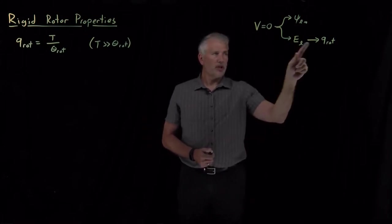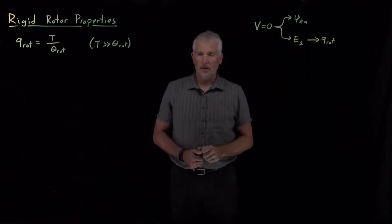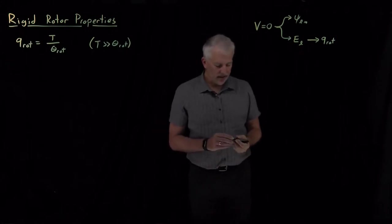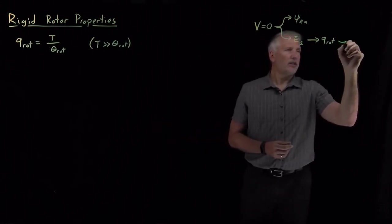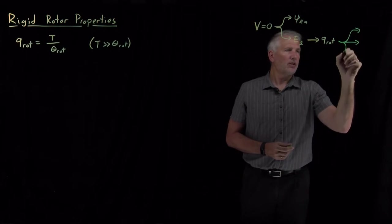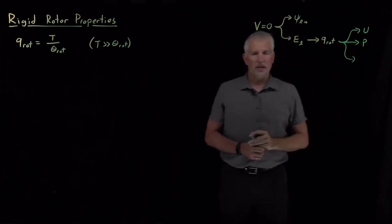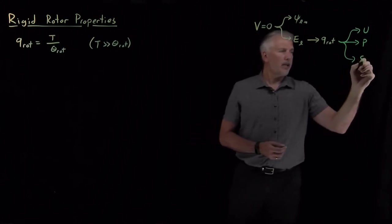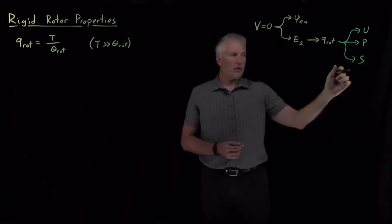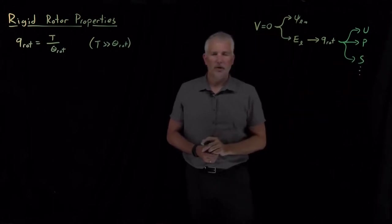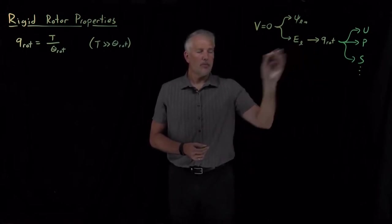We can use those energy levels to obtain a partition function. Then the next step, which we haven't done yet, is to use that partition function to calculate various thermodynamic properties. We can calculate the energy, the pressure, the entropy, anything for which we have a thermodynamic connection formula.